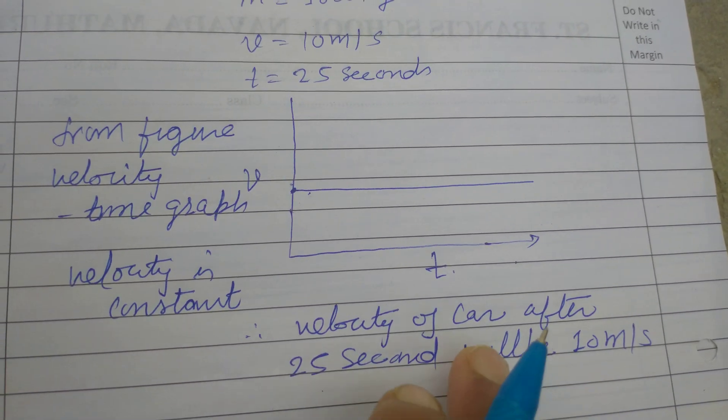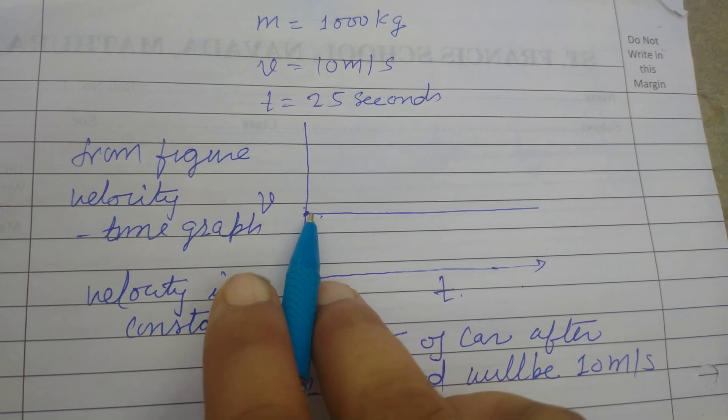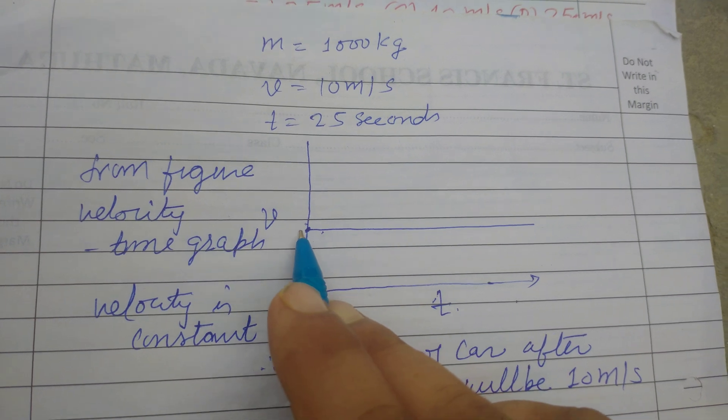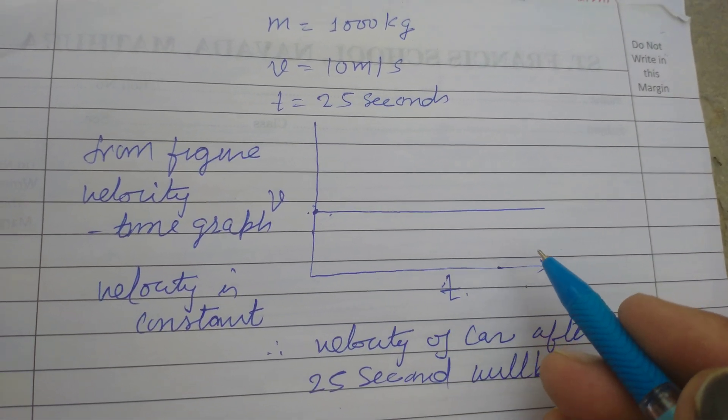Because if its graph is a horizontal line parallel to time axis, it means velocity is constant while time is increasing.